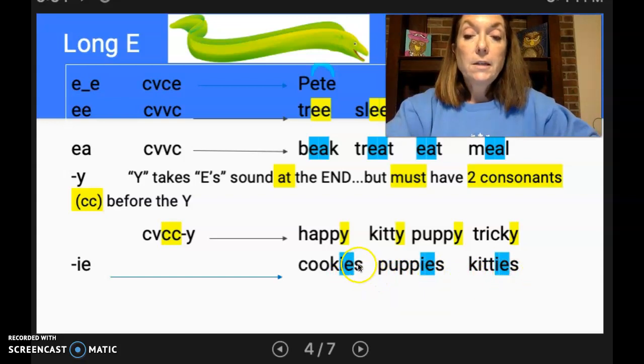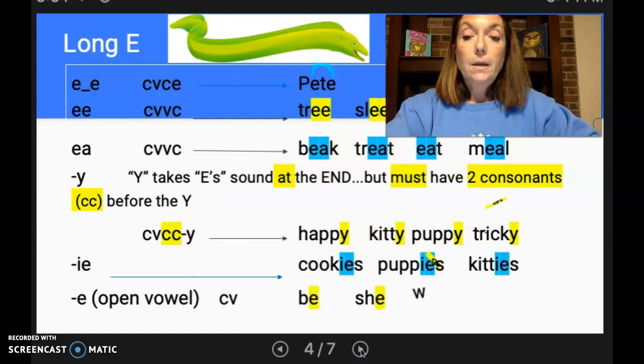Now if I took the S off a cookie, it would still be cookie. I wouldn't have to spell that with a Y. And the last way is an open vowel, which is E at the end of the word. And it's just a one syllable. Just one syllable, open vowel. We have be, she, we, he.